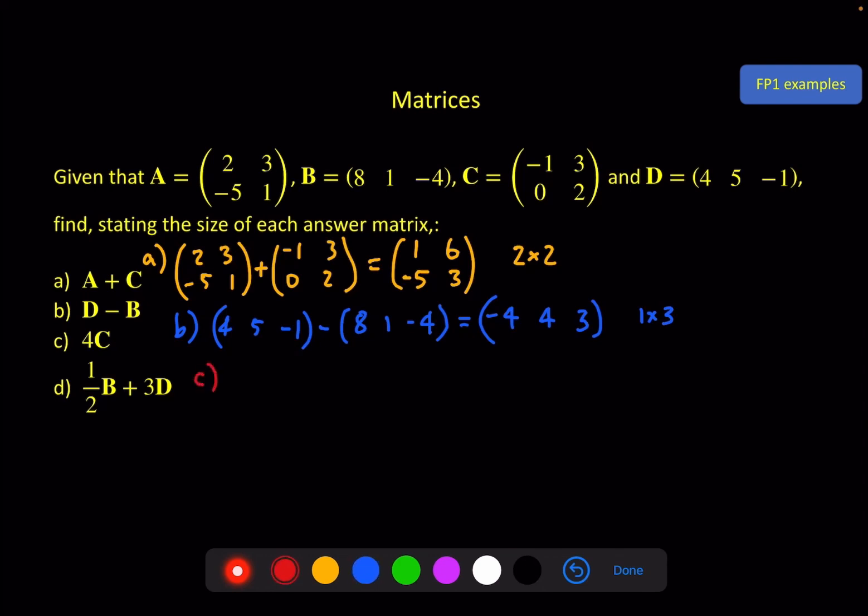Onto part C. 4 times the matrix C gives 4 times each element: minus 4, 12, 0, 8.